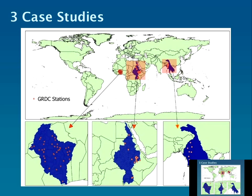We've been working with three case studies: the Volta, the Nile, and the large basins of Myanmar. This map shows those locations, and the dots indicate observational stations that we have access to for evaluation and calibration of our modelling system.